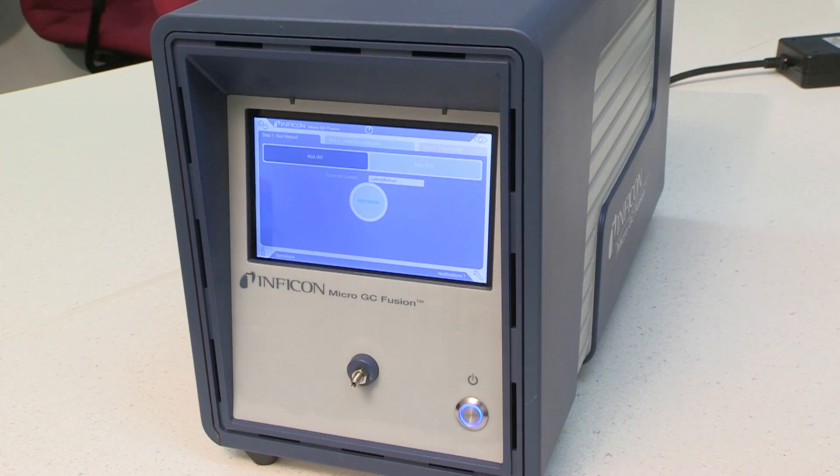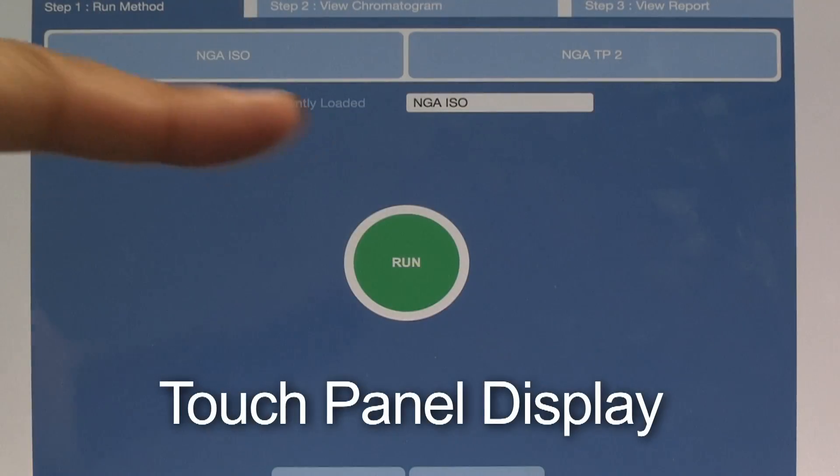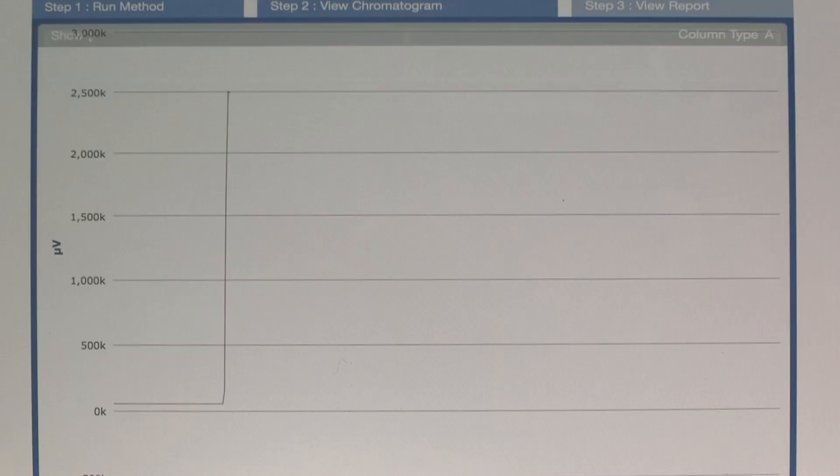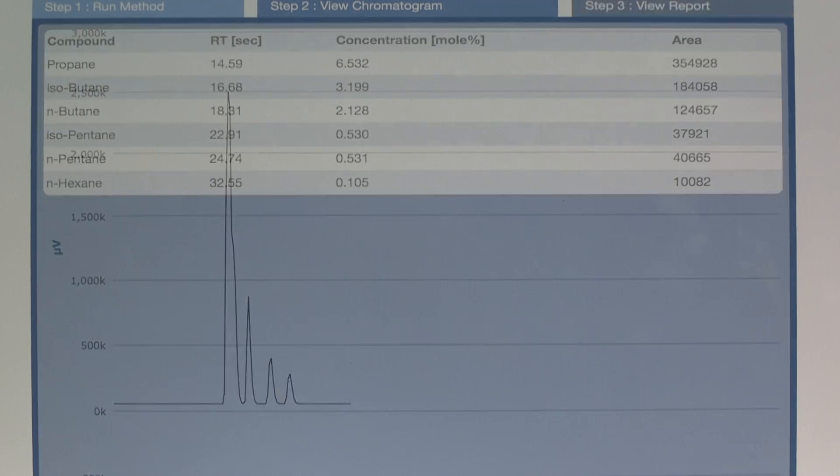Fusion is designed to make GC technology user friendly. It is equipped with a touch panel display, allowing users to select a predefined method, run a sample and view the results.